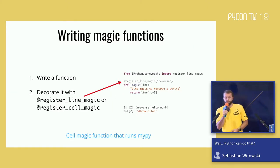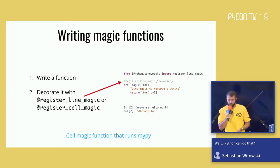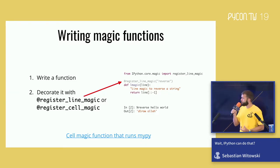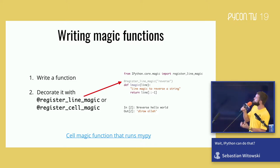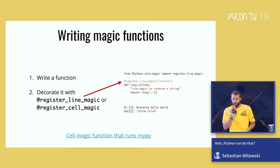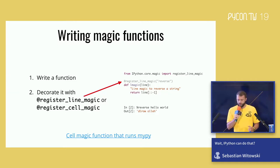What if those 124 magic functions aren't enough? You can easily write your own. All you have to do is write a function and decorate it with either `register_line_magic` or `register_cell_magic` decorator. For example, here I'm creating a magic function that will reverse any string I pass. If you're looking for a more advanced example, I wrote a short step-by-step guide on how to create a cell magic function that runs the mypy type checker on a block of code.